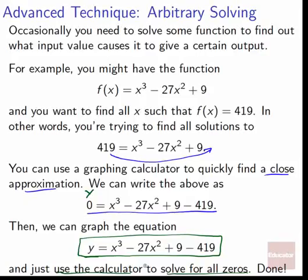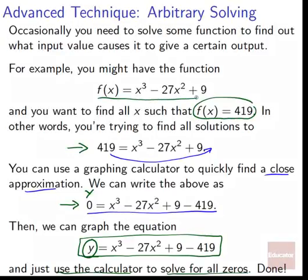So we plug that into our graphing calculator and we use the calculator to solve for all zeros. Because if we find a zero, if we find each of the zeros to this equation right here, if we find 0 equals this equation, well, then we will have satisfied this equation. And if we've satisfied that equation, we've figured out all the places where f(x) = 419. And so we're done. So this is a really great way. If you want to just figure out what input values will cause a function to give certain output values, you can work through this method and you can solve arbitrarily for anything. It's pretty great.